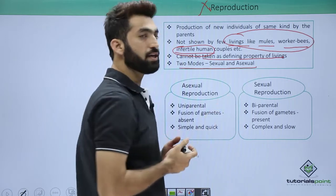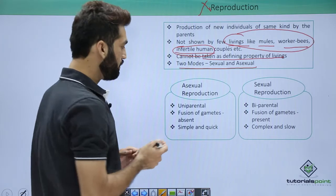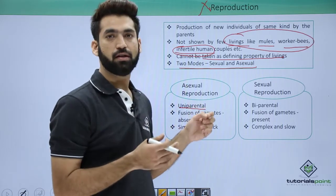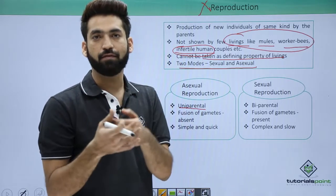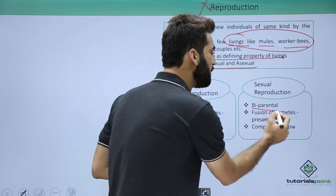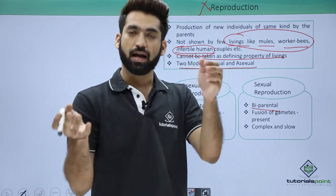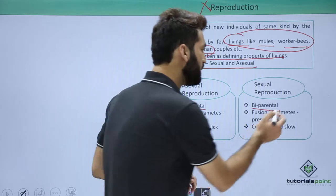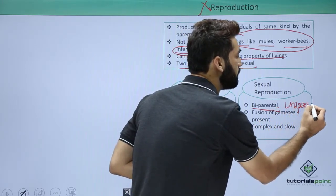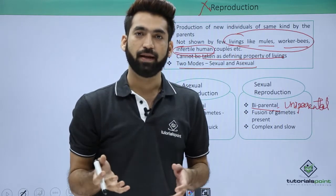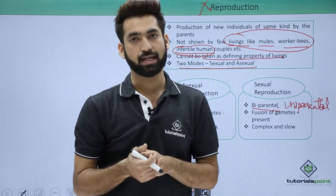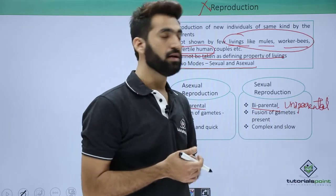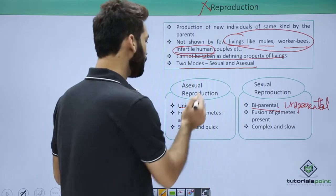There are two modes of reproduction: sexual and asexual. In asexual reproduction, reproduction is uni-parental — you don't require another parent. It occurs without gamete formation and fusion. Sexual reproduction is mainly bi-parental, requiring two parents whose gametes fuse to form a zygote. However, sexual reproduction can also be uni-parental in bisexual plants, where male and female gametes are present on the same plant.